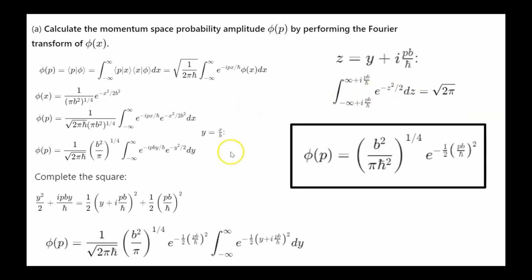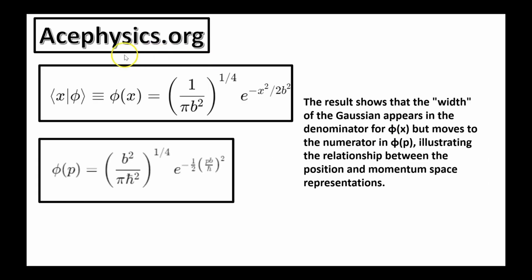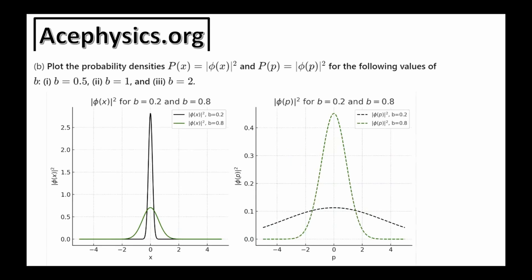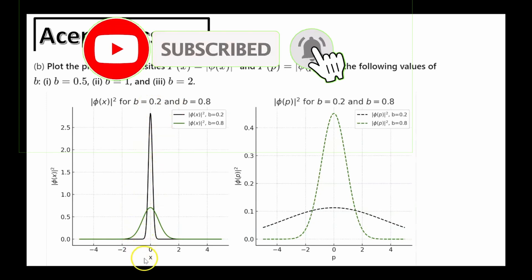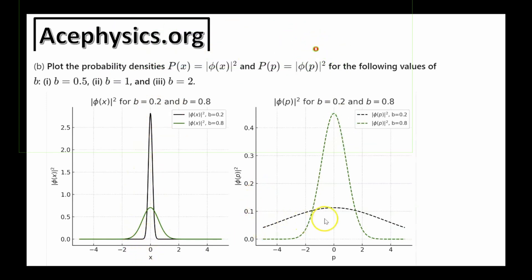Therefore, this is the momentum state wave function — we've done it. If you're given the wave function in the position basis, you can use the Fourier transform to get the momentum basis wave function. The result shows that the width b of the Gaussian appears in the denominator for phi of x but moves to the numerator for phi of p, illustrating the relationship between position and momentum space representations. For Part B, plotting the probability densities for different values of b: when b equals 0.2, the particle is localized in position, close to zero, but the momentum basis wave function is spread out. A more localized wave function in position space results in a broader spread in momentum space and vice versa — this demonstrates the uncertainty principle in action.